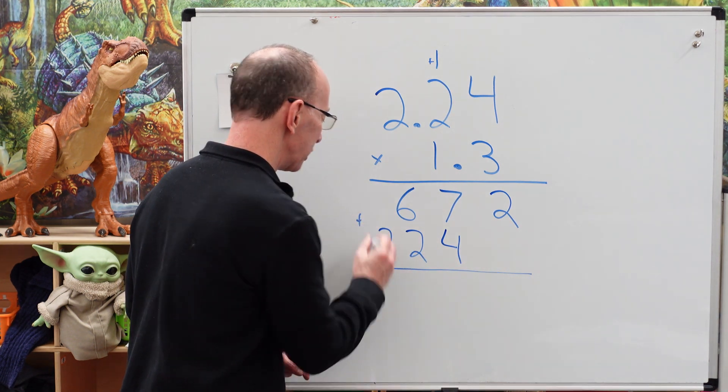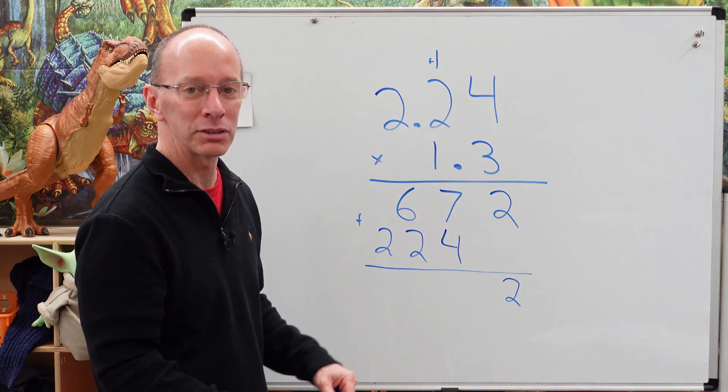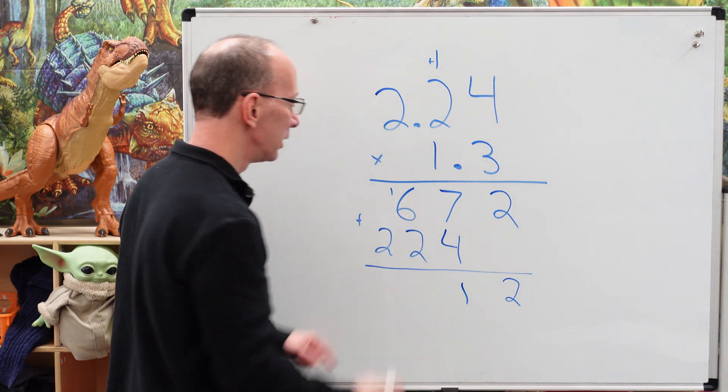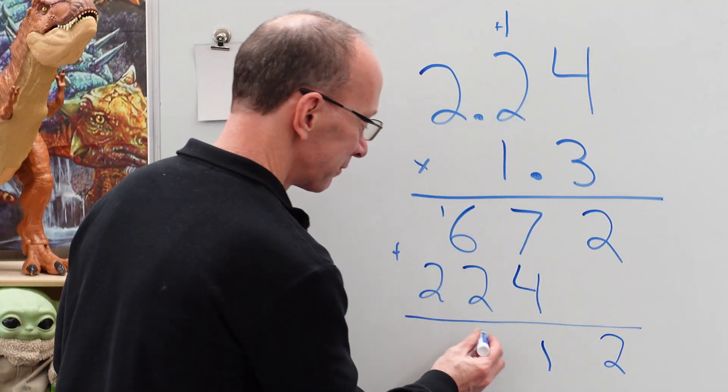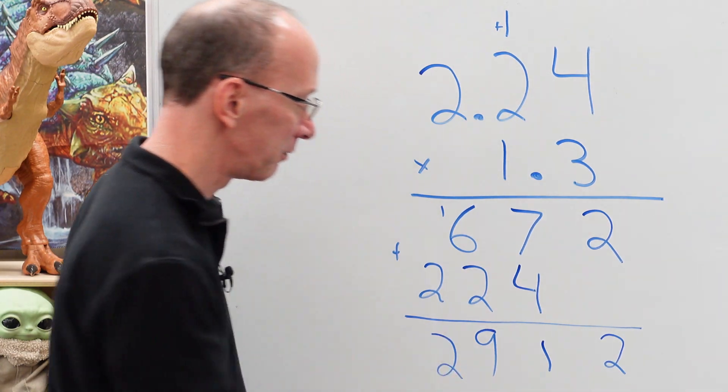Go ahead and add these numbers up. Bring that 2 right down here. 7 plus 4. 7. 8. 9. 10. 11. Put the 1 here. Carry the 1. 6. 7. 8. 9. And just drop that 2 down there. Just drop it down right here. All right.